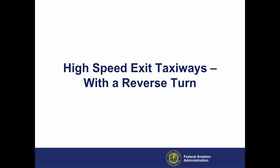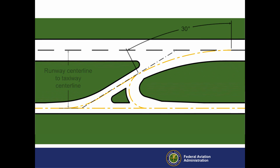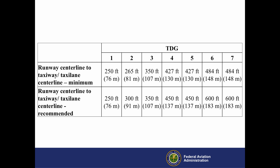For high-speed exit taxiways with a reverse turn to the parallel taxiway, you may need to increase the runway centerline to parallel taxiway centerline separation to accommodate the 30-degree exit turn and the following 150-degree turn. This is necessary to achieve a nose gear steering angle of no more than 50 degrees for the taxiway design group (TDG). For each TDG, the AC lists the minimum and recommended runway centerline to taxiway centerline distance for standard high-speed exit taxiways that require a reverse turn.